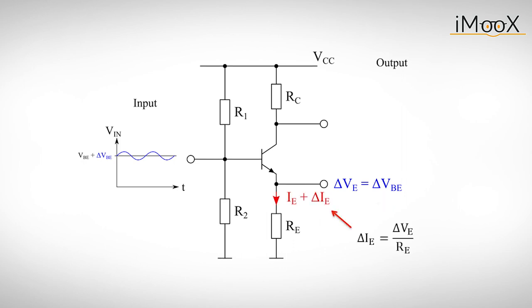This will cause an alternating emitter current, delta IE, which can be expressed as the alternating emitter voltage, delta VE, divided by the emitter resistor. Since the AC voltages at the base and the emitter are the same, we conclude that delta IE is delta VBE divided by the resistance RE.